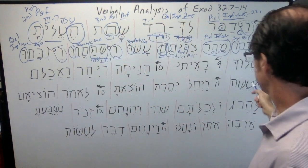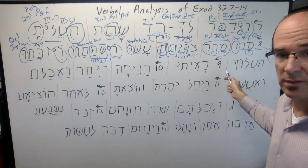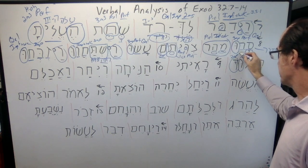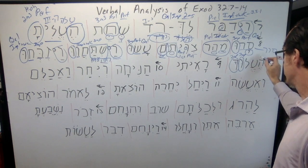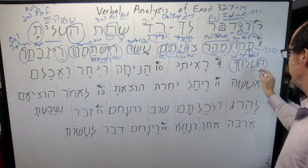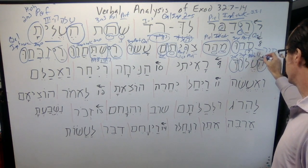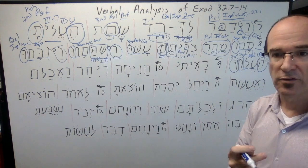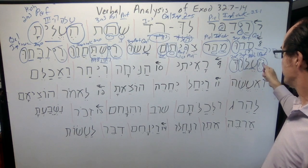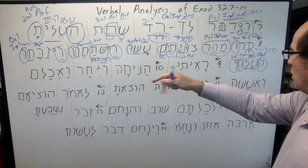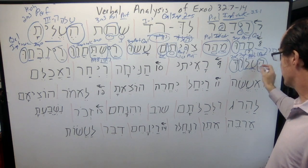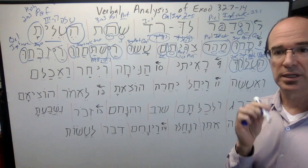Last verb of verse eight. Notice we have a third masculine plural suffix. The shuruq tells us it's third masculine plural, and this is just going to be a perfect. You might think this is the root, but the he is our signal of the Hiphal. So this is a 3MP Hiphal perfect. We know the perfect from the shuruq. The root is another third-hey verb — from alah. The Hiphal here: they have caused you to go up, or 'they sent up.' So causative with the Hiphal, and the perfect is completed action.